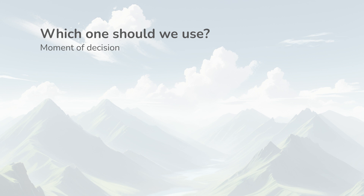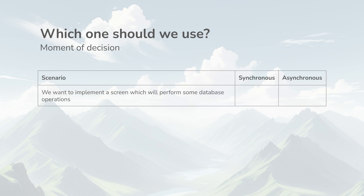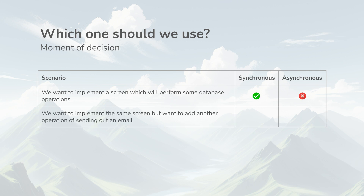Now comes the very important question: which is better and which one should we use? The answer is that you should use these approaches based on the requirements. For example, if we want to implement a screen that performs database operations, an immediate response is needed so the user can correct any data issues — so we should use synchronous Apex. If we add an operation of sending an email to that same screen, sending an email can be done in the background as it doesn't need human intervention, so we can use synchronous Apex for the database operation and asynchronous Apex for sending the email.